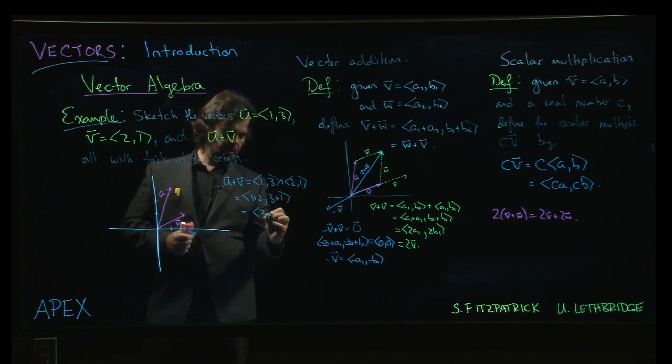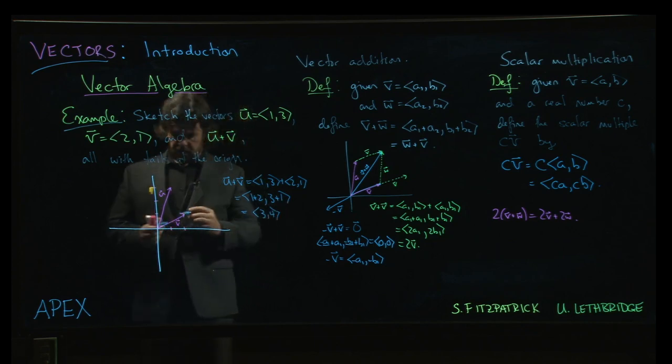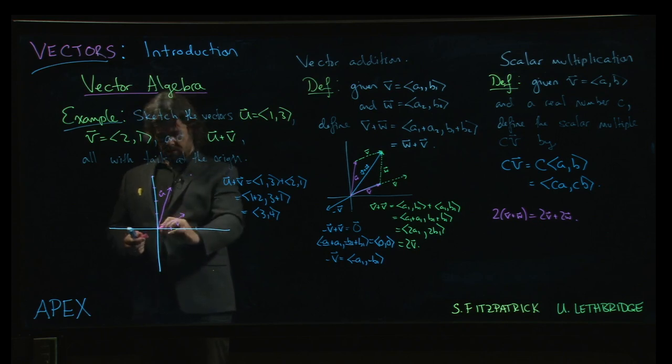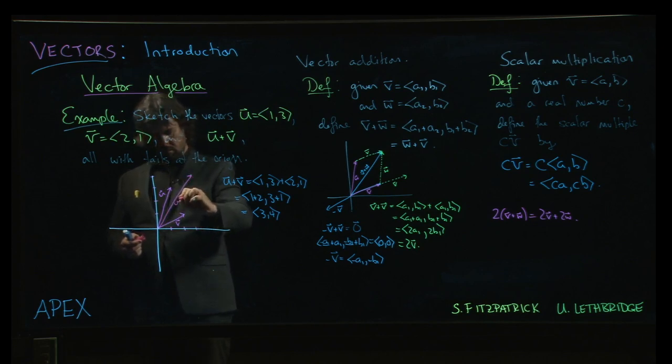So that gives me the vector 3, 4. So, over 3, up 4, puts me to about there. And so here is u plus v.